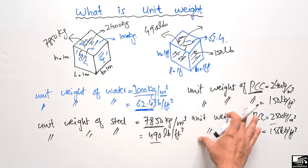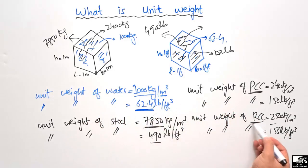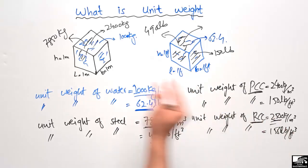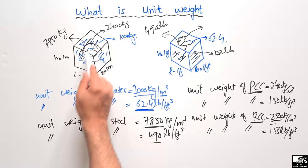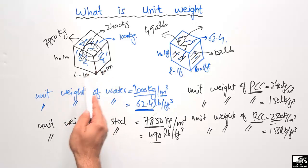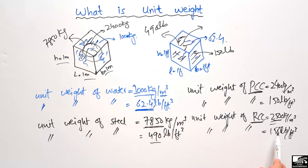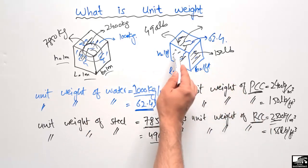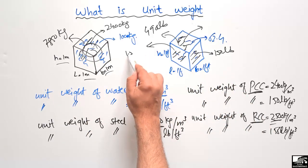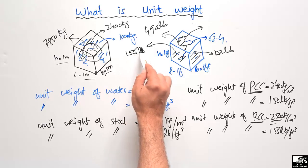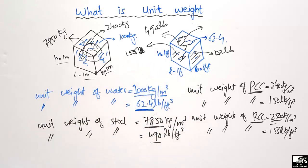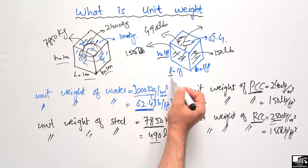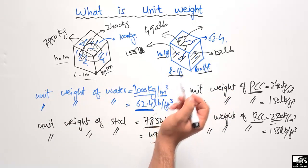As we discussed with water, steel, and PCC, the unit weight of RCC (reinforced cement concrete) is 2500 kilogram per cubic meter, which is higher than PCC because steel has a higher weight. In pound per cubic foot, the unit weight of RCC is 156 pound per cubic foot, meaning 156 lb of RCC can fit in a cube of one foot height, one foot length, and one foot width.